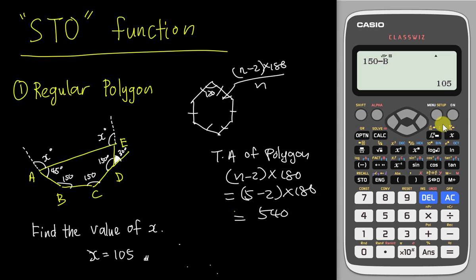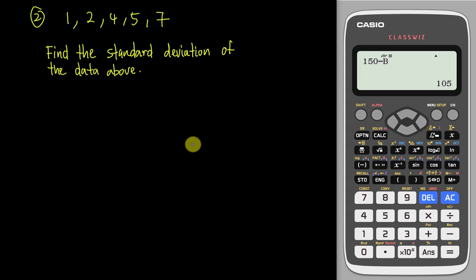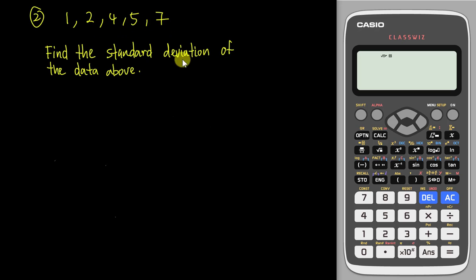For this function it's less useful when the example is quite easy, but it becomes more useful when questions get more complicated. I'm going to show you another example. Let's say we have some ungrouped data. I'll use grouped data — it's even better because it's more complicated. For this example, the numbers are 1, 2, 4, 5, 7, and the question asks you to find the standard deviation of the data.